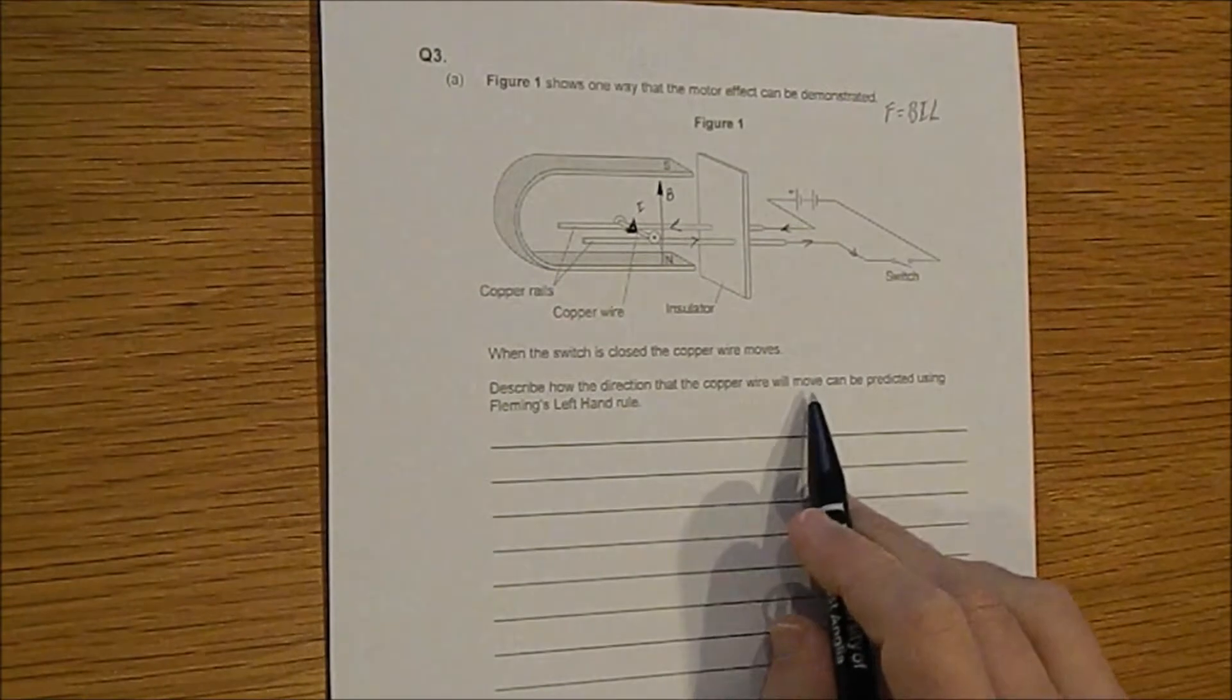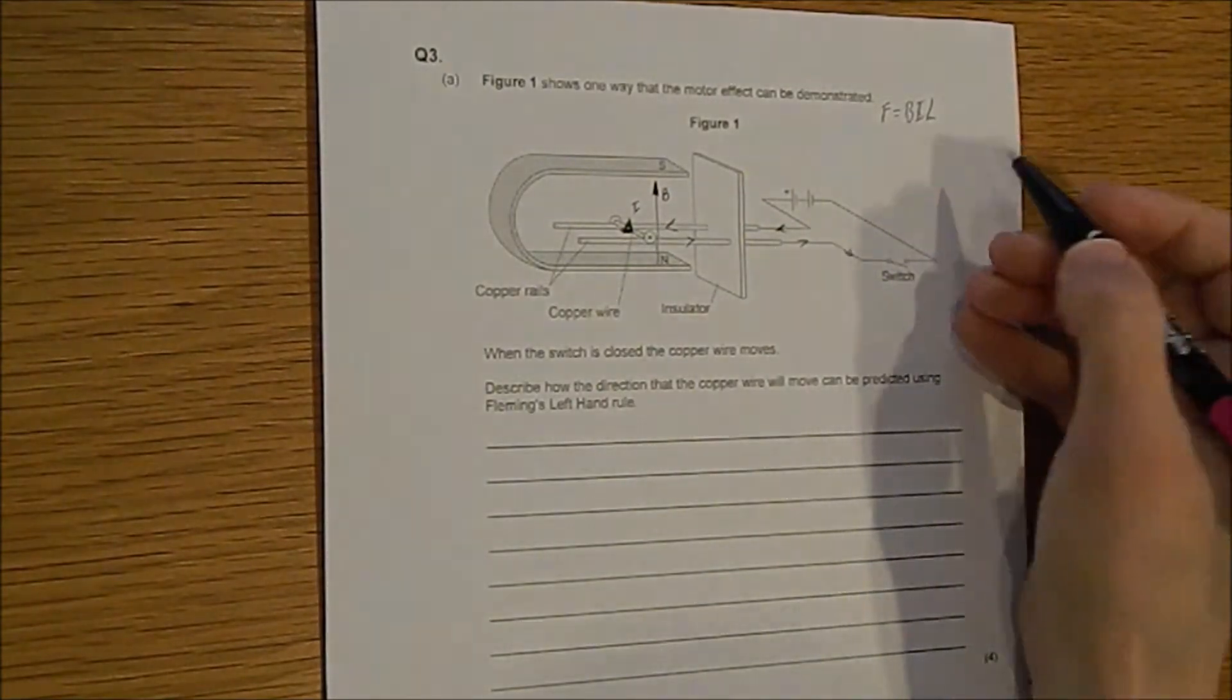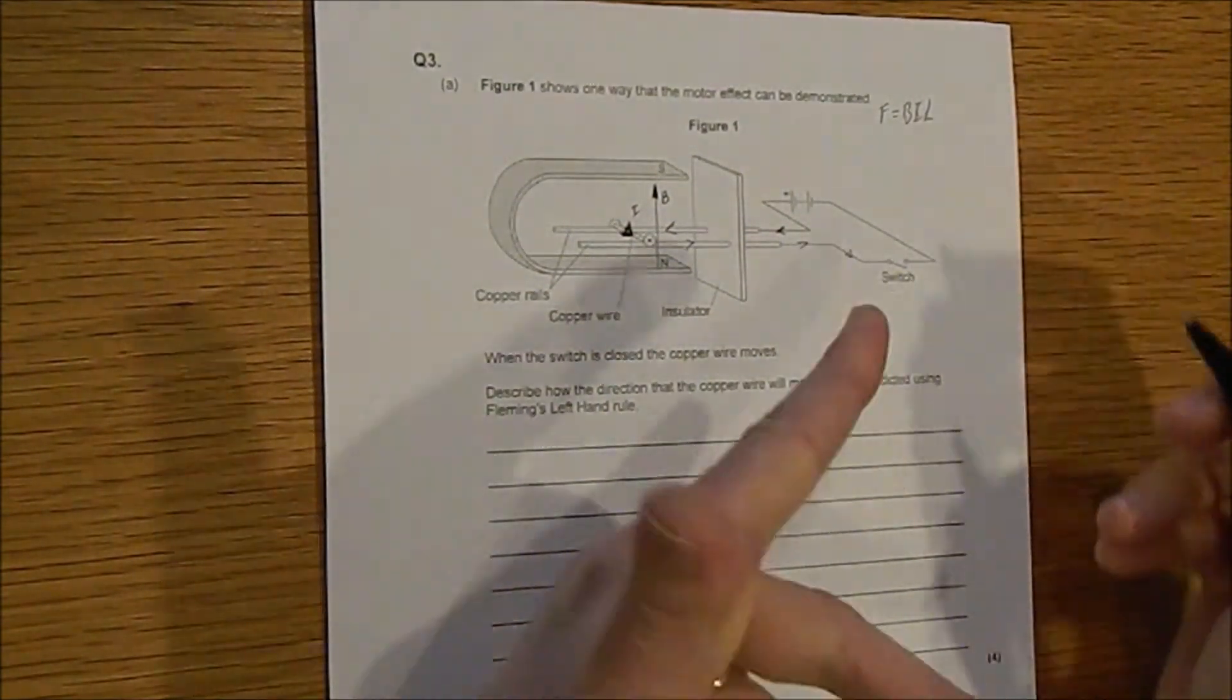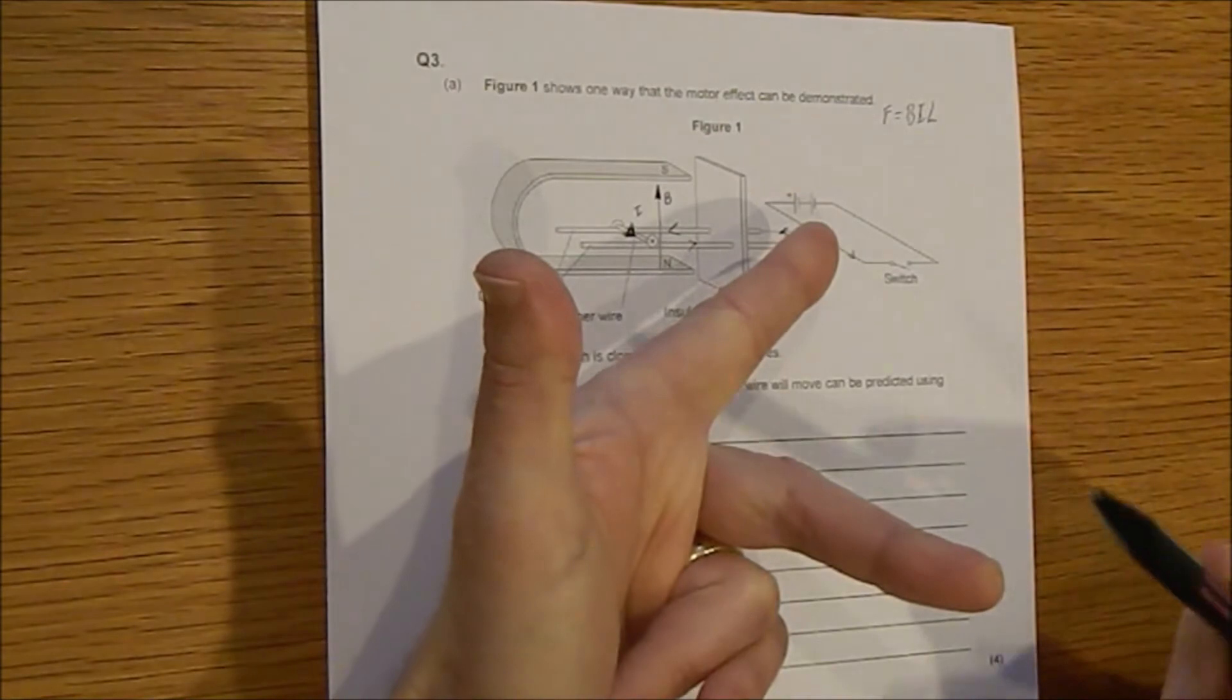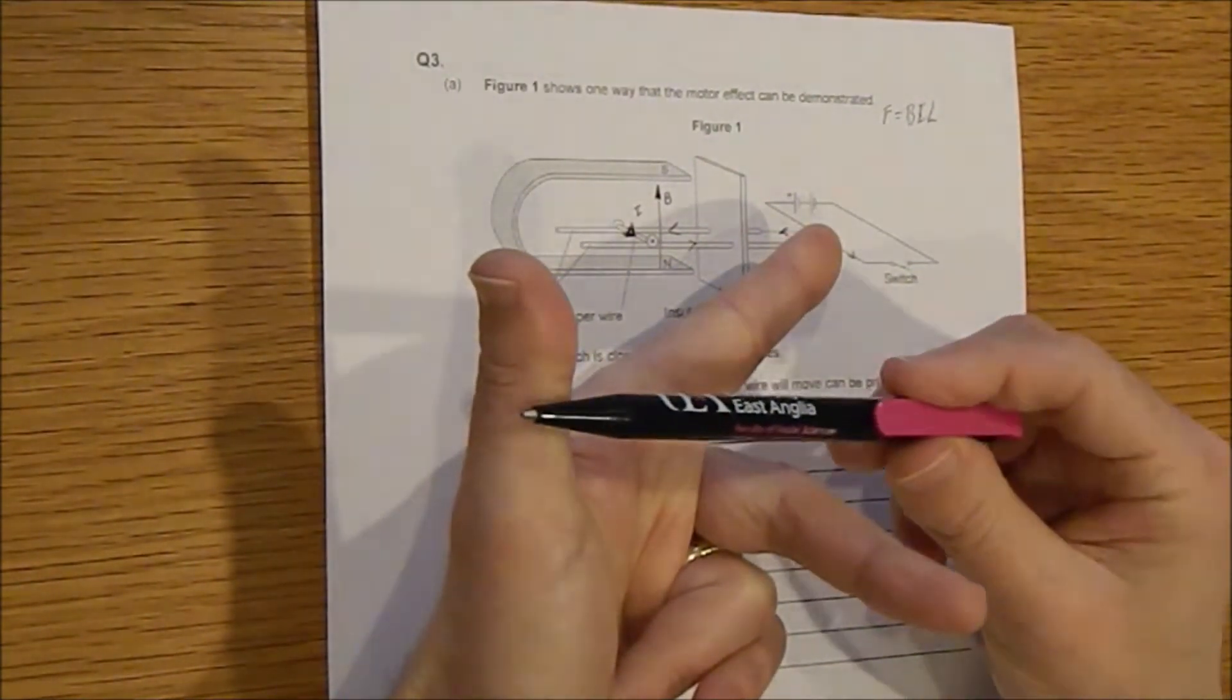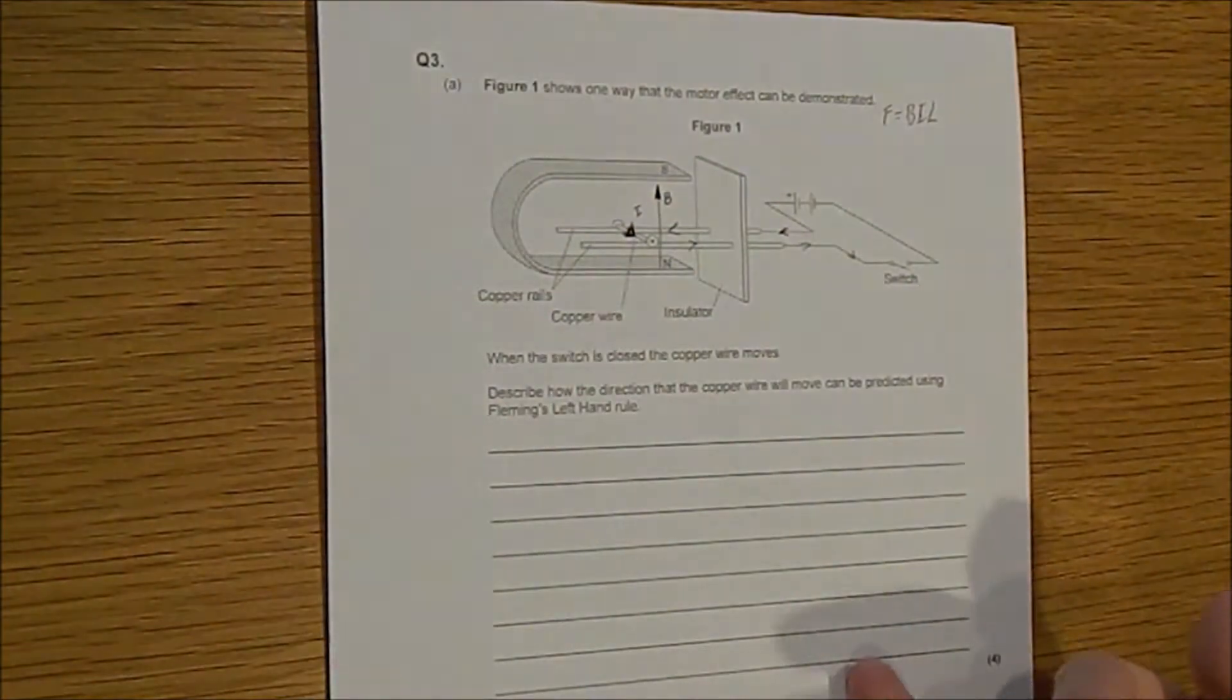Describe how the direction the copper wire will move can be predicted using Fleming's left hand rule. So what does this mean? Well, if you take your left hand then the thumb, the first finger and the middle finger give you aspects of the field that interact with each other. So thumb is for motion, first finger is for field, second finger is for current. So let's just jot those down because we need those.